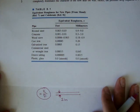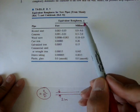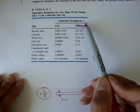Now, this table right here gives us values for epsilon, which are the equivalent roughness values. And that's what epsilon stands for.